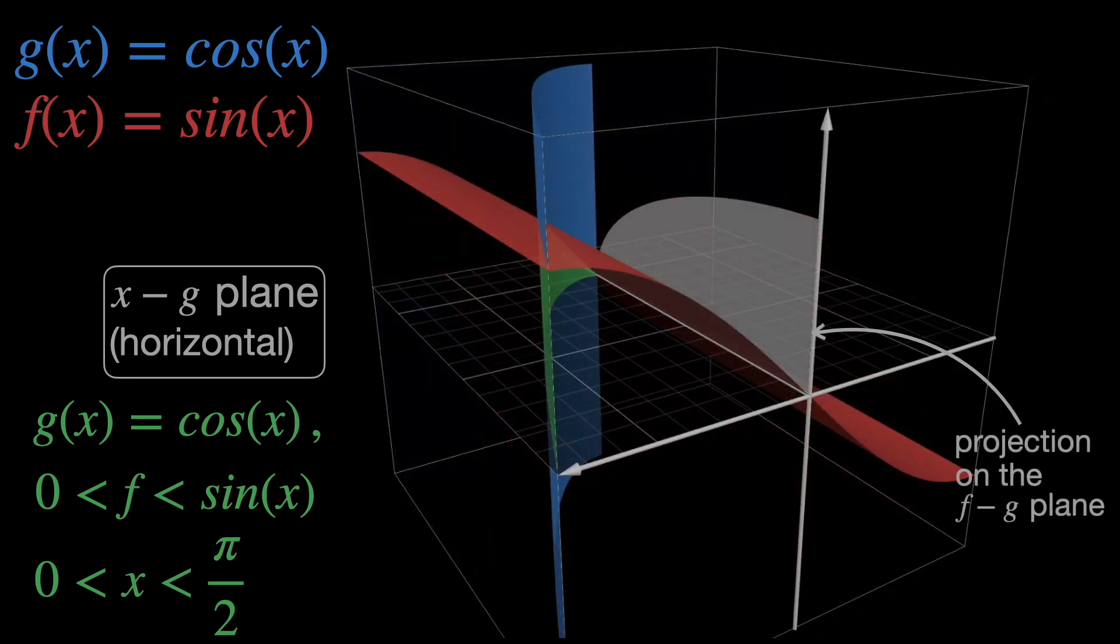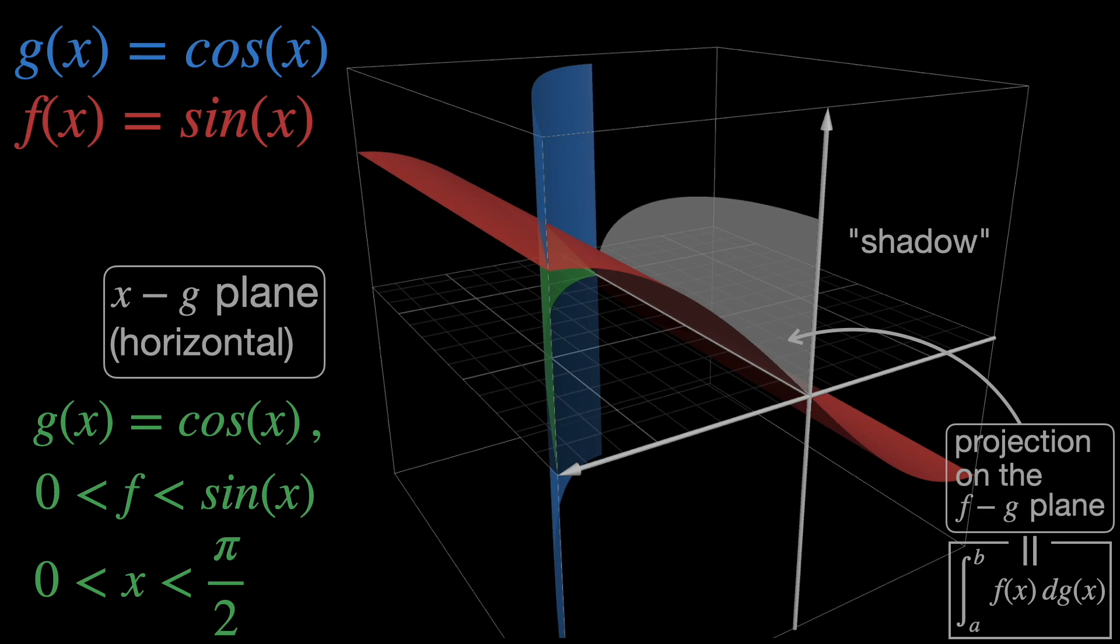Again, take a close look at it so that you can understand what kind of projection we'll make. This is the projection of the green surface on the fg plane, which gives us the result of the integral. Again, you can imagine it as a cast shadow.